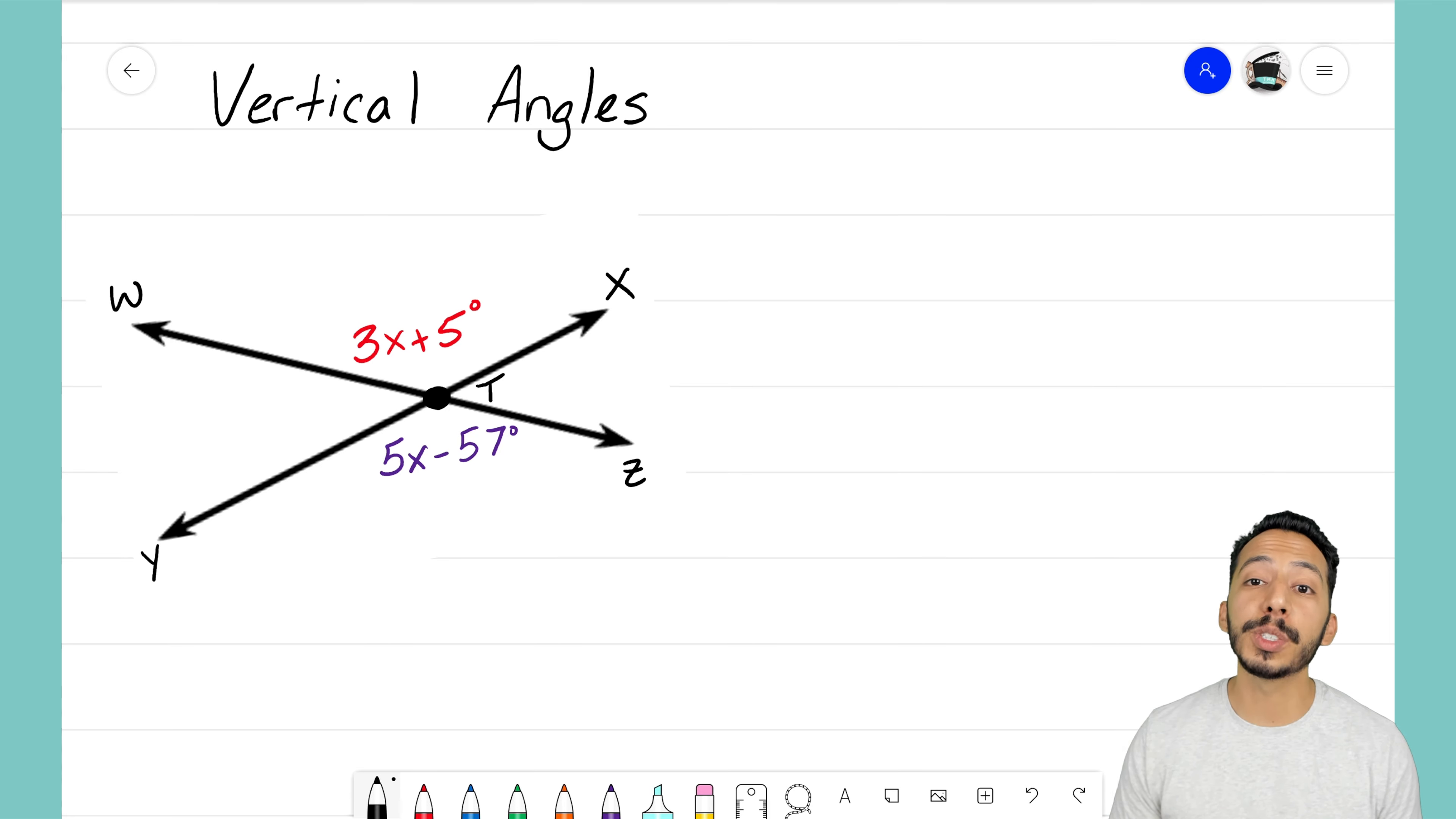I have this angle here on the top which they're labeling as 3x plus 5 degrees, and then we have the angle on the bottom which is 5x minus 57 degrees. Because those angles are opposite of each other when two lines are intersecting, that means that they are vertical angles.